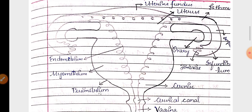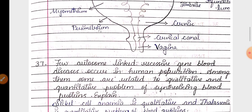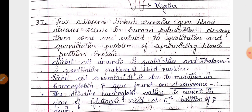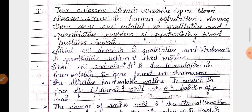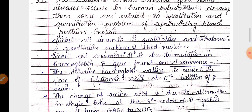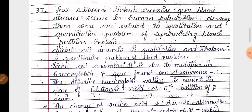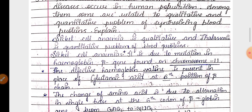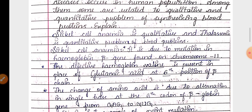Next question, the labeled diagram of human female reproductive system. Then 37th question is related to two disorders, genetic disorders. One is sickle cell anemia and another one is thalassemia. Both these disorders are autosomal linked recessive. One is responsible for qualitative and another responsible for quantitative problem in synthesizing hemoglobin.